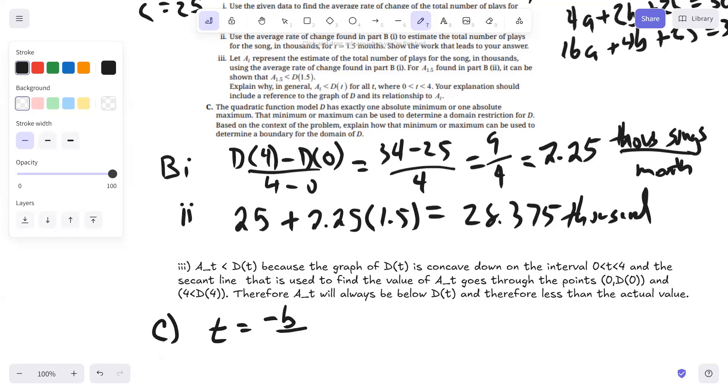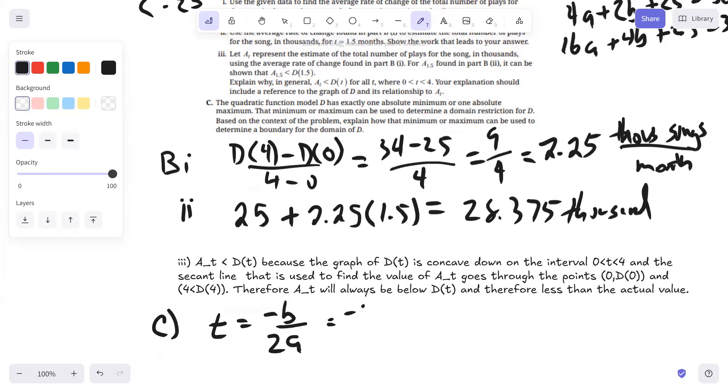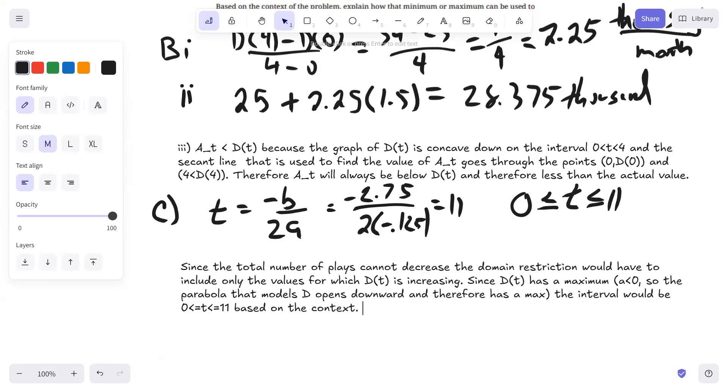So the T value is going to be the opposite of B over 2A, negative 2.75 over 2 times negative 0.125. And that's going to be 11. So I know the domain for T is going to be between zero and 11. I'll type that up in a concise statement. And that concludes question number two.